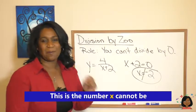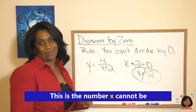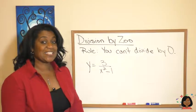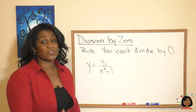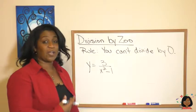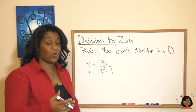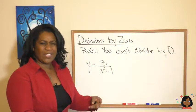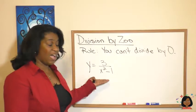We can put one into this equation, four into this equation, eight, negative four, negative ten, but one number we cannot put in is negative two. Take a look at this example: we have y equals three over x squared minus one.